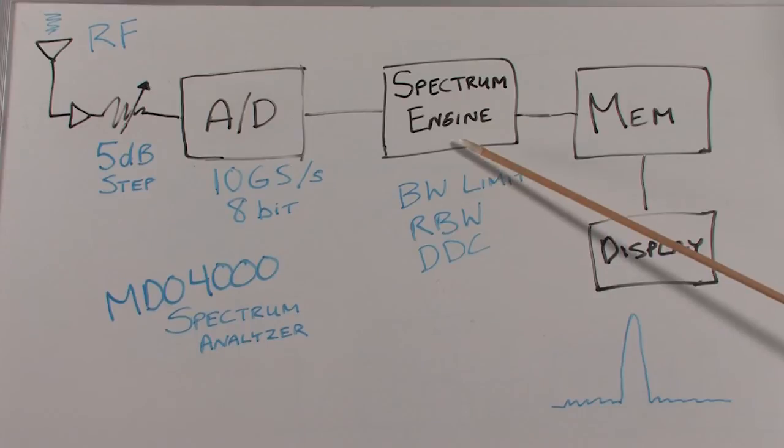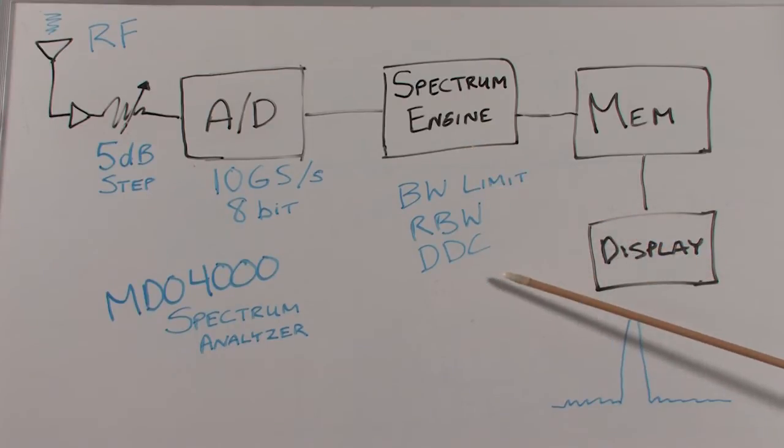The MDO spectrum engine takes the 8-bit samples from the wideband digitizer and performs the complex task of digital downconversion and spectral processing not found in scopes. This is the key to the sensitivity, speed, and dynamic range of the integrated spectrum analyzer.